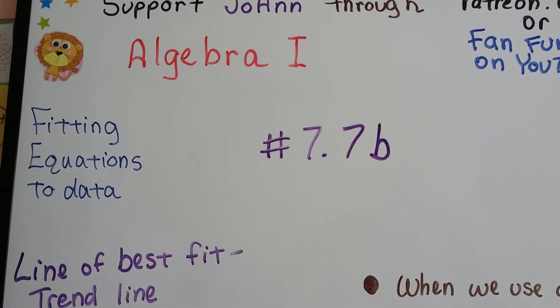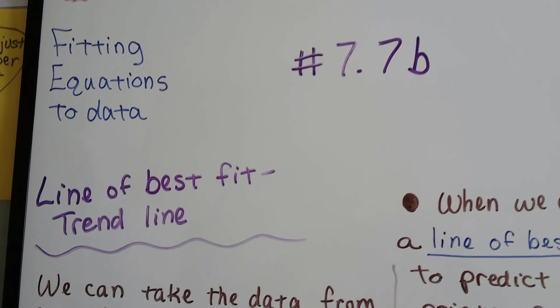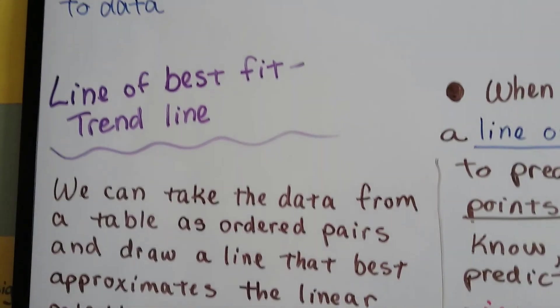Hello again. We're at 7.7b, and we're going to talk about the line of best fit, which is also called a trend line.